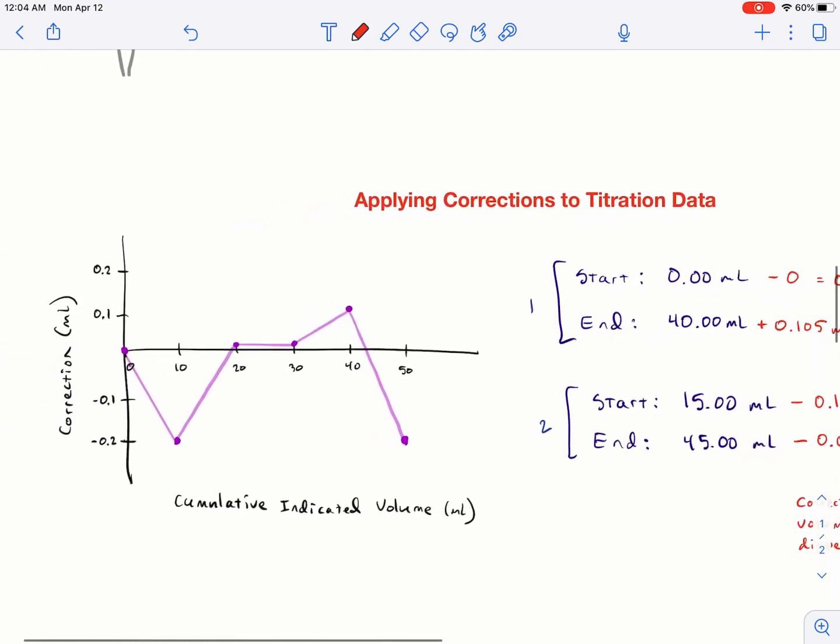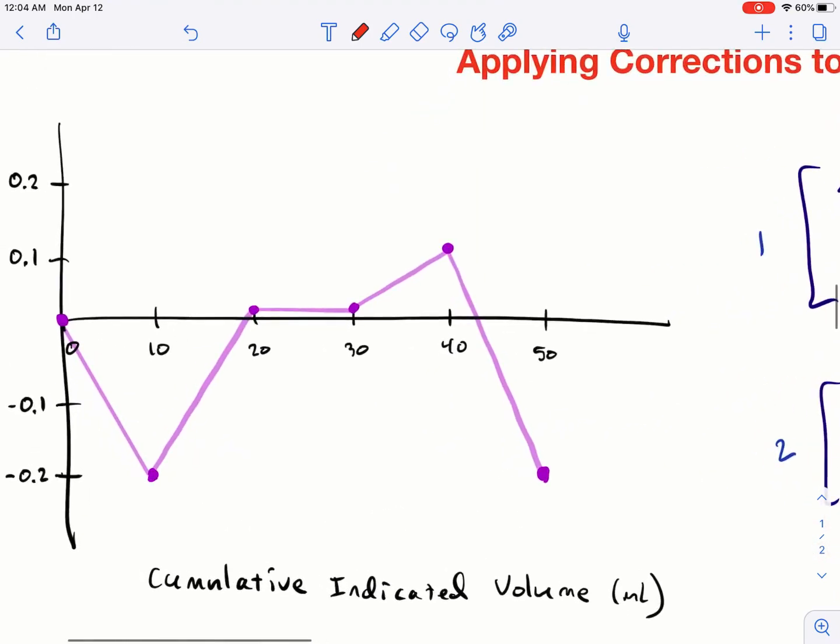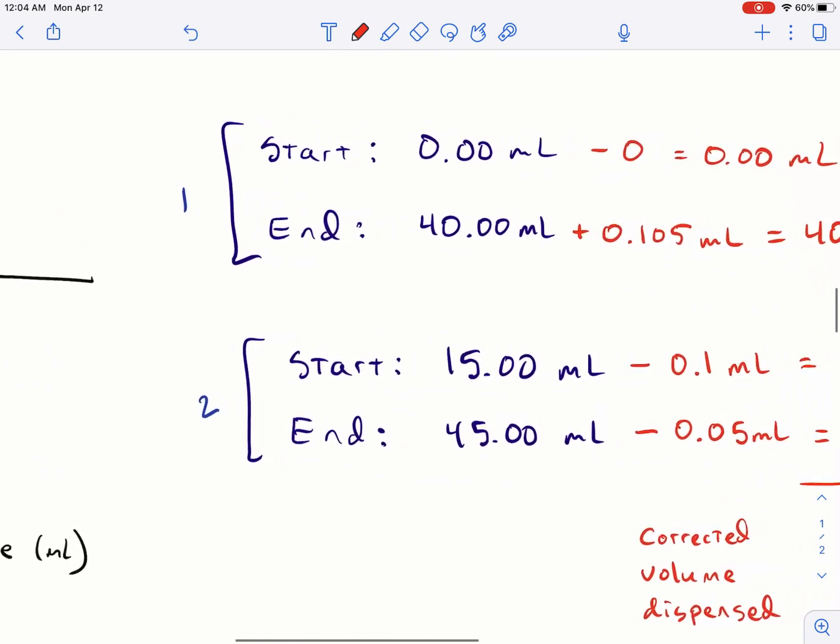So 15 milliliters. I'm just going to say 15 right here. And then this happens to be about 0.1. It's a little lower than 0.1 because I didn't draw my graph pretty. I actually interpolated it because 15 is right between 10 and 20. I just averaged these two cumulative corrections to give me a value here. It comes out to be 0.1 mils.